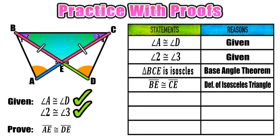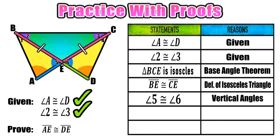Always label as much information as you can — the more you figure out, the easier the proof becomes. We also notice that in the two smaller triangles BEA and CED, there's a pair of vertical angles, angle 5 and angle 6, which are congruent because all vertical angles are congruent. In each of those yellow triangles we now have two consecutive congruent angles followed by a congruent side, so we can conclude that triangle BAE is congruent to triangle CDE by the Angle-Angle-Side postulate.